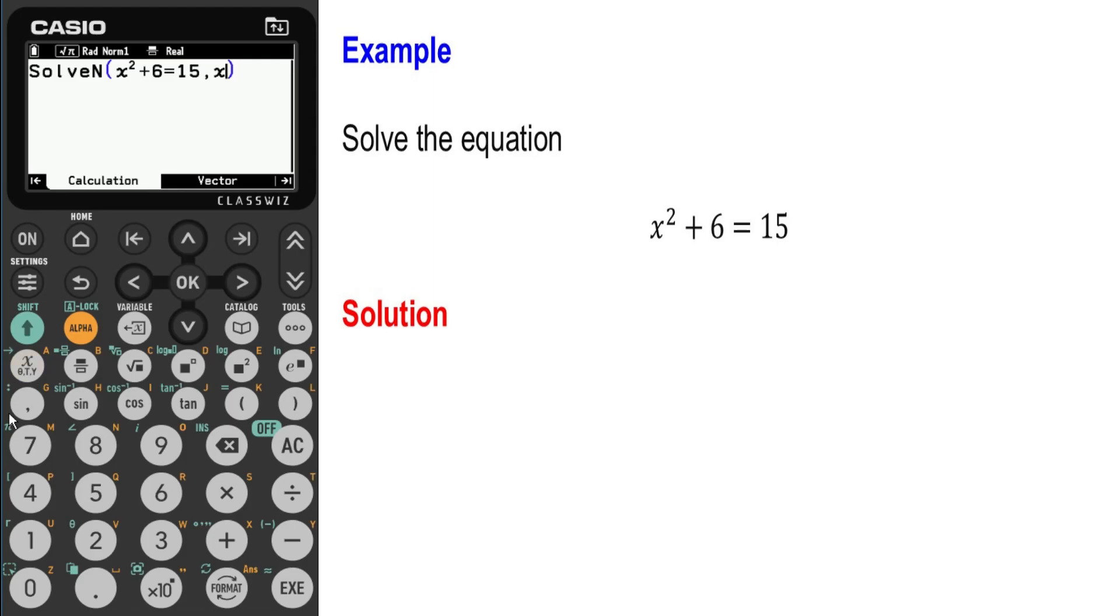If we press the comma key once again, we can now bound our solutions between two particular values such as negative ten and ten. Notice negative ten is my lower limit. My upper limit is ten.